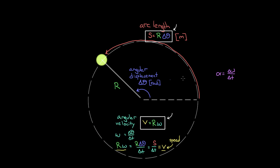To relate angular acceleration to regular acceleration, we use the same approach: multiply both sides of the alpha definition by radius r. This gives r·alpha = r·(Δomega / Δt).